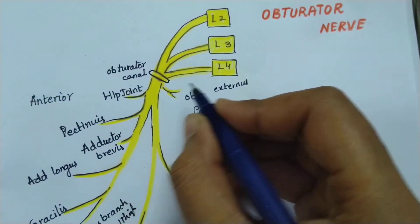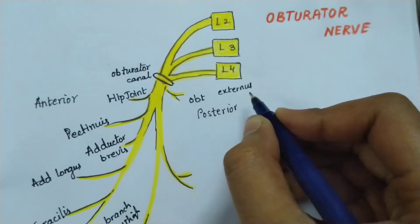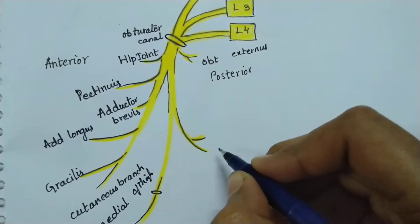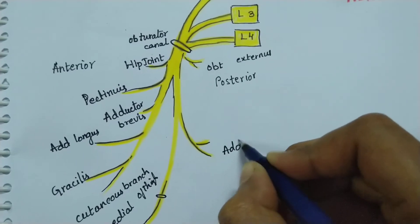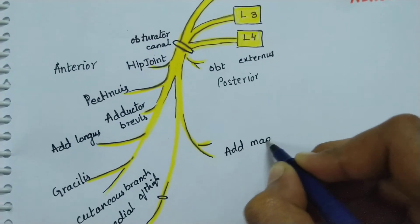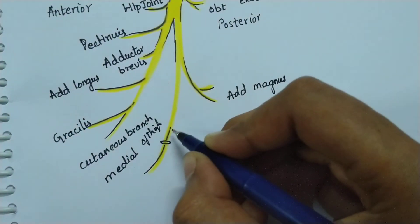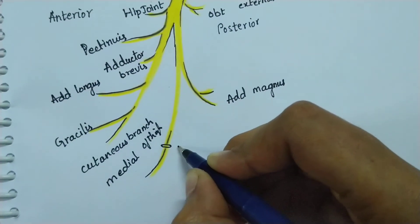That lies near the external opening of the obturator canal. It supplies the adductor magnus muscle. Then it goes into the adductor hiatus.